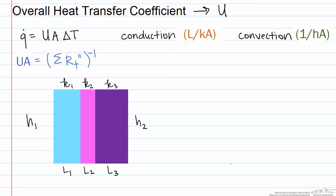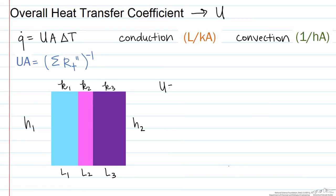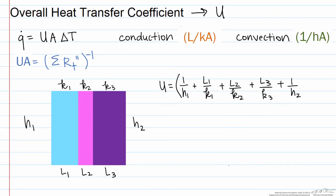Now let's calculate what our u is going to be. So our u is going to be 1 over h1 plus L1 over k1 plus L2 over k2 plus L3 over k3 plus, finally, our 1 over h2. And the sum of these are going to be raised to the minus 1. So this is an example if you have a plane wall.